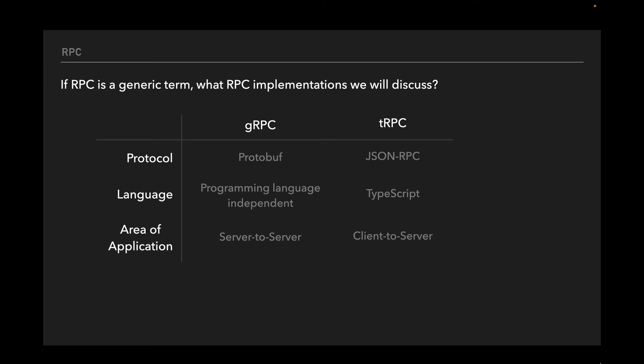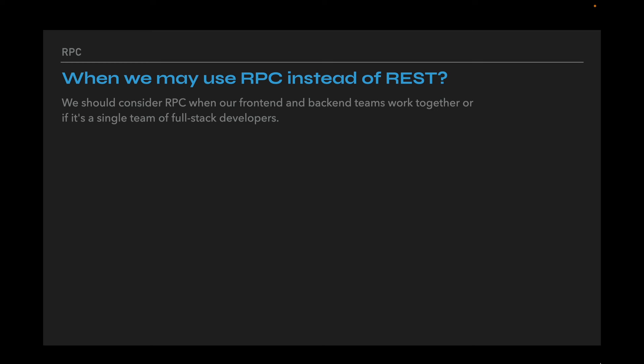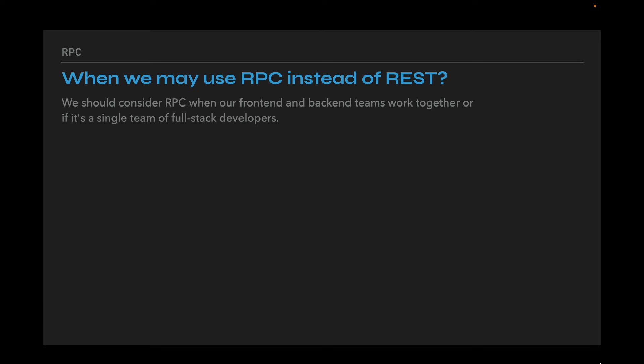gRPC uses protobuf as an underlying protocol. It is programming language independent and usually used to establish server-to-server communications. tRPC follows RPC principles as well but relates to other features — it uses JSON-RPC, is built on TypeScript, doesn't imply using other languages, and is mostly used for client-to-server communications. tRPC is a more obvious alternative to REST and GraphQL. Before jumping to a particular implementation, RPC may give benefits but is not as familiar as REST or as flexible as GraphQL. We should consider RPC when frontend and backend teams work together or it's a single full-stack team.